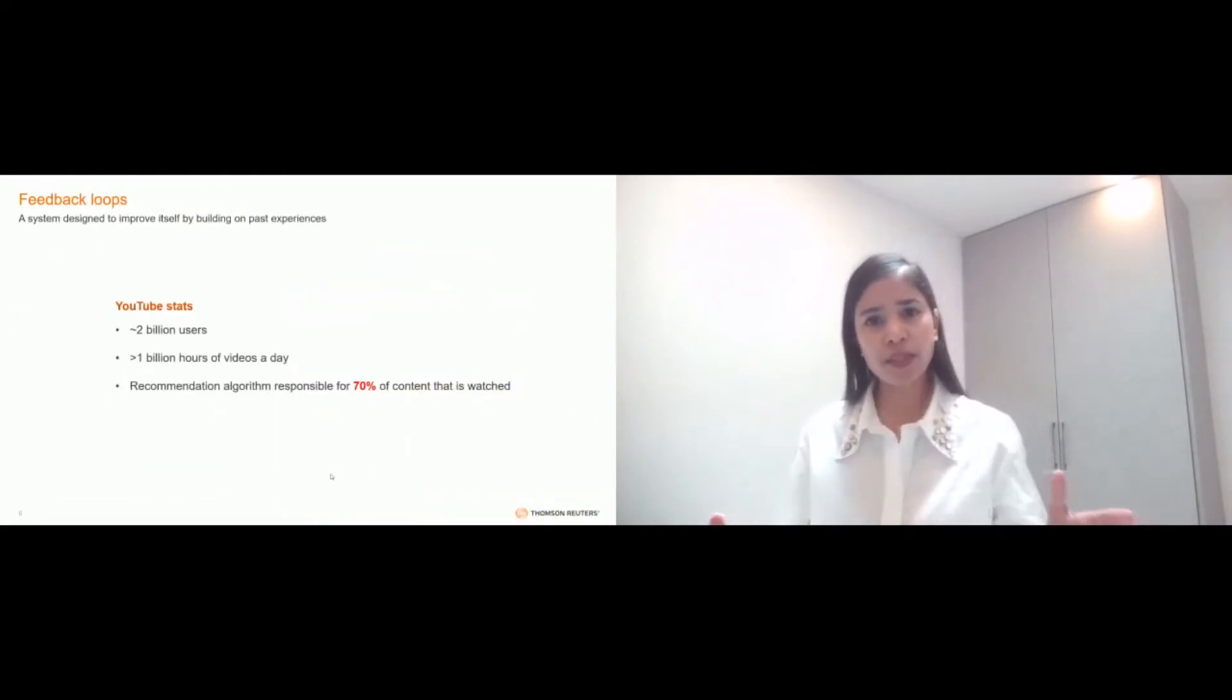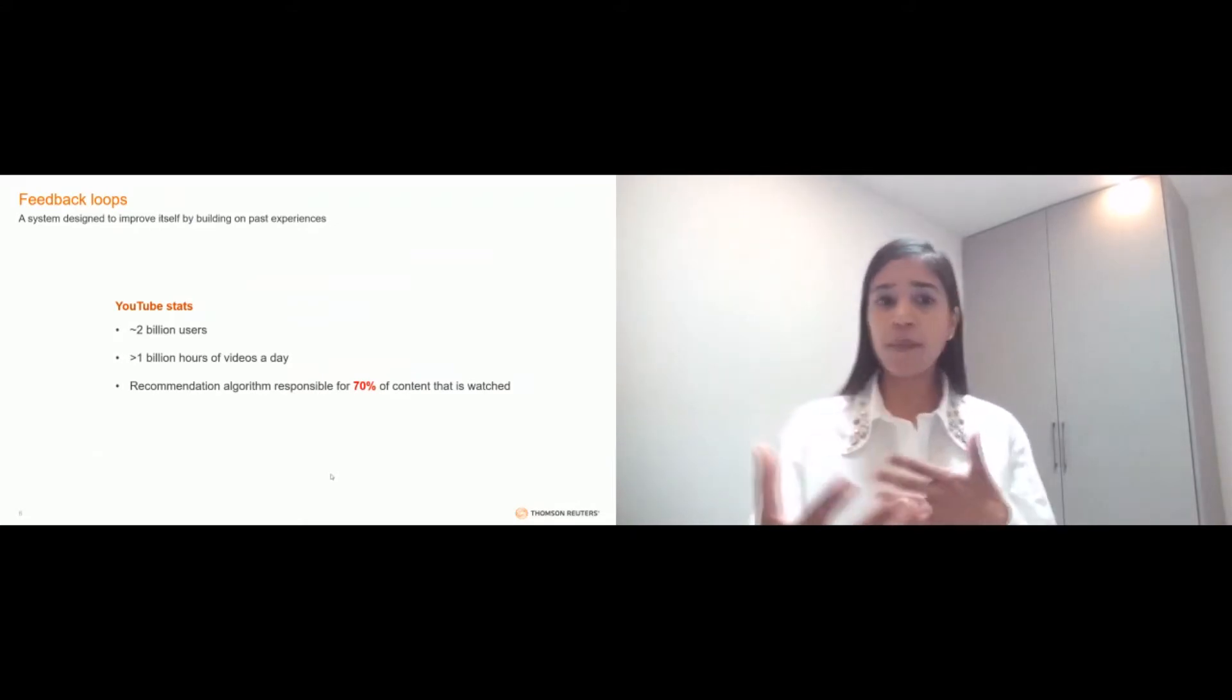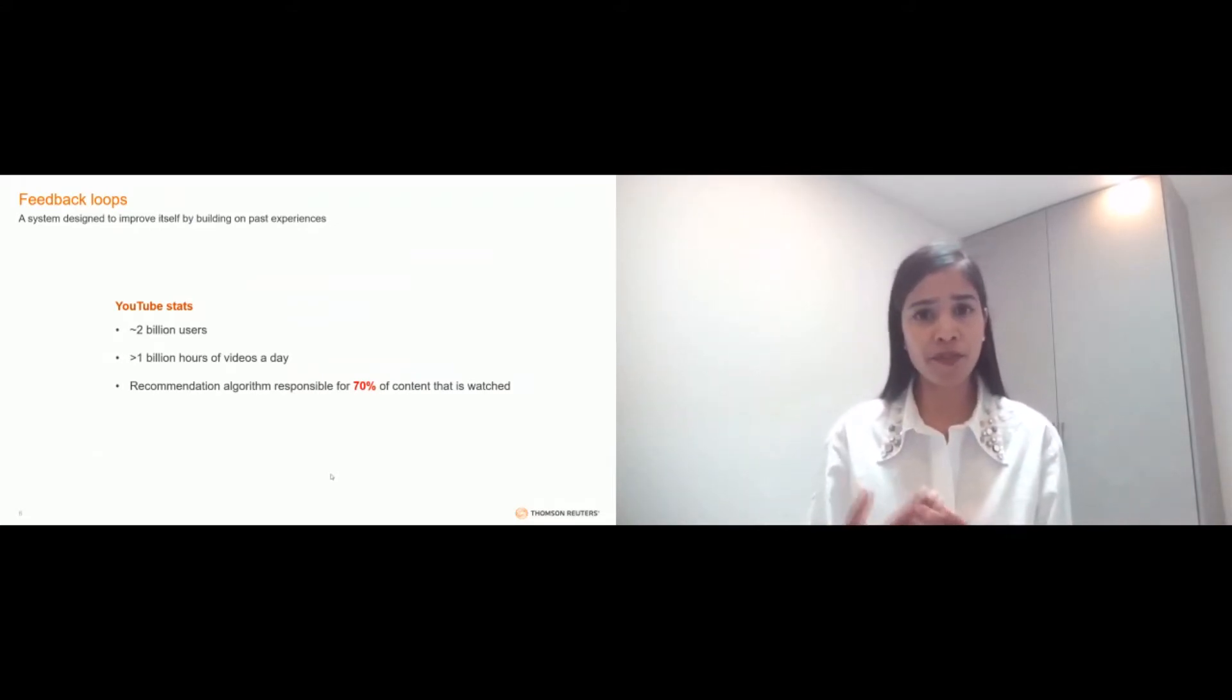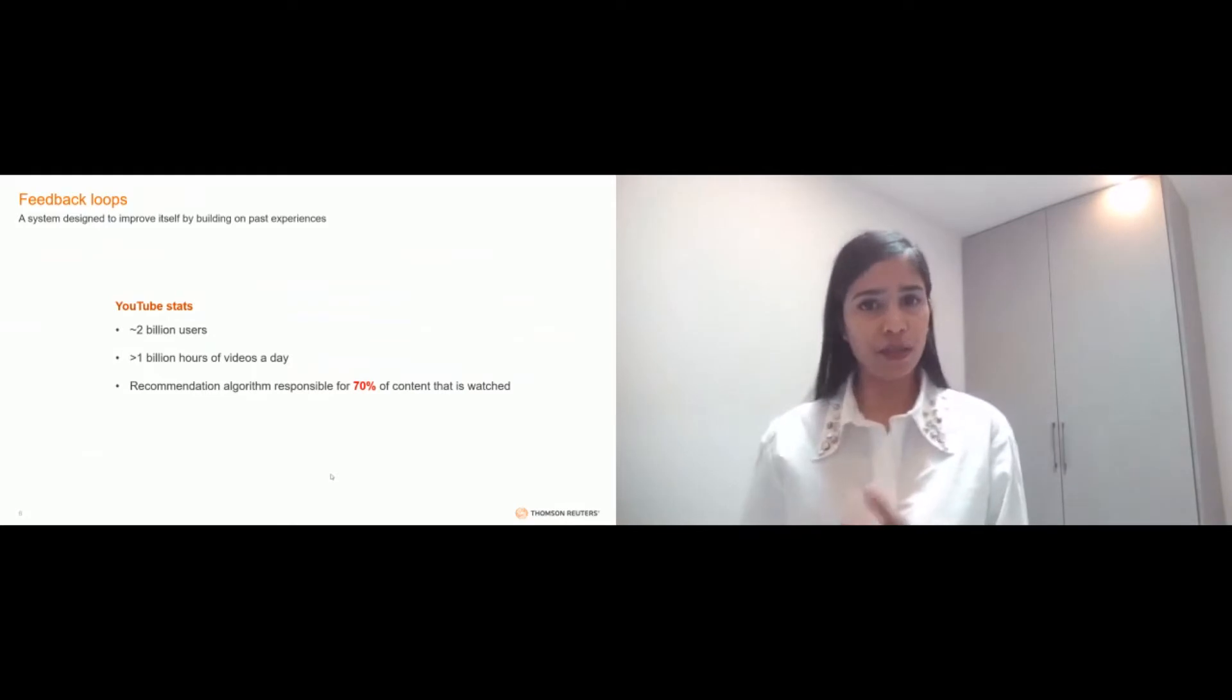In very simple terms, a feedback loop refers to a system that is designed to improve itself by learning from its past experience. And this happens when your algorithm is responsible for the next set of data that the user is going to see.